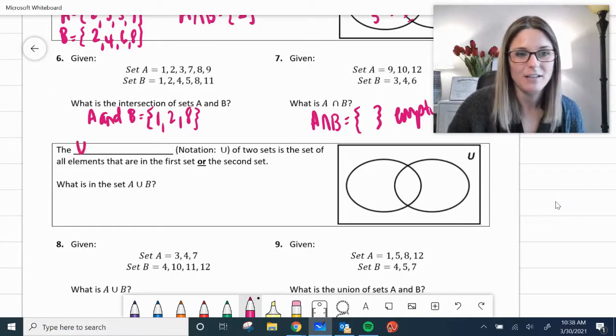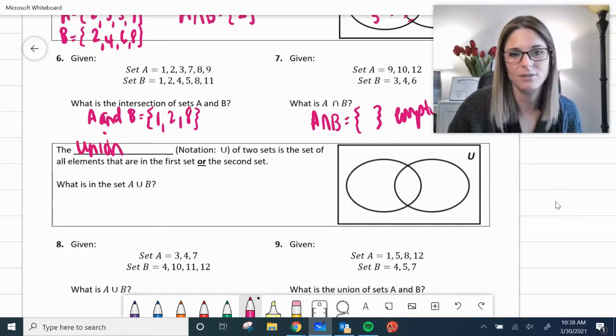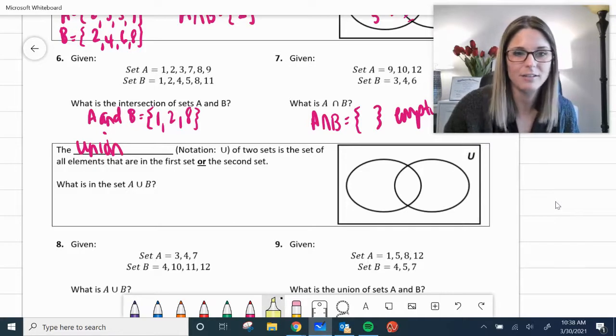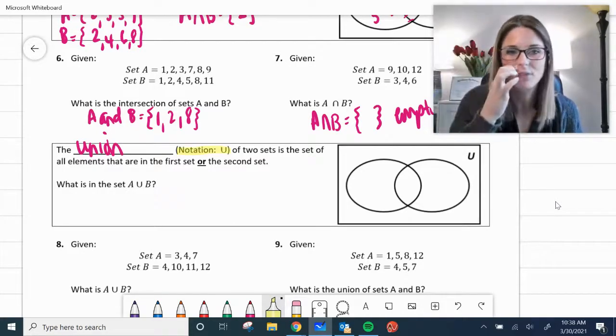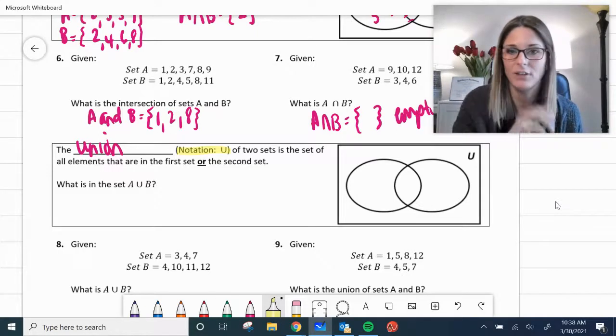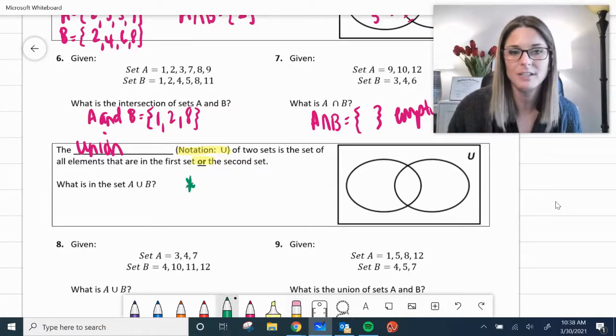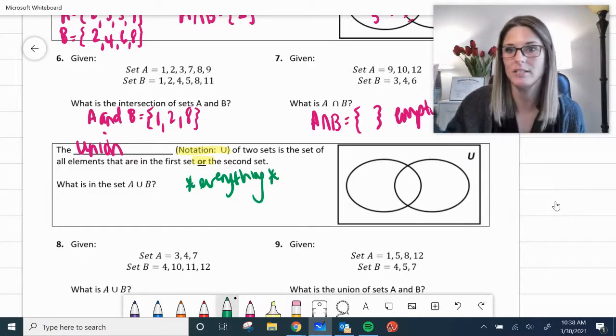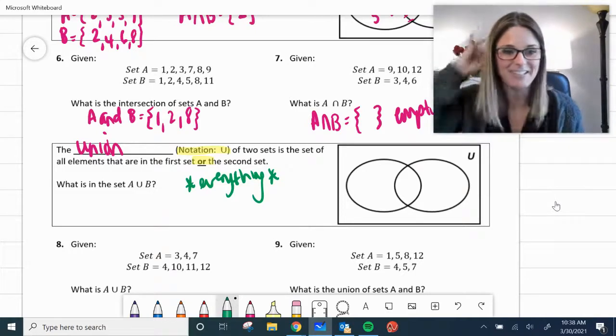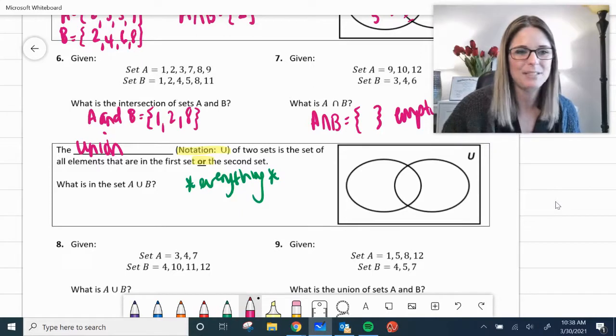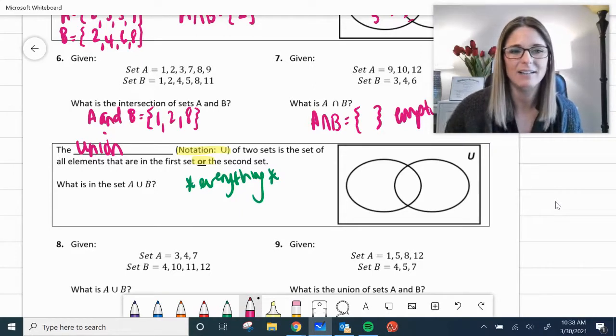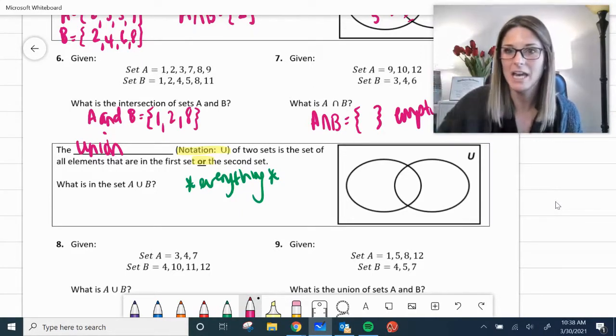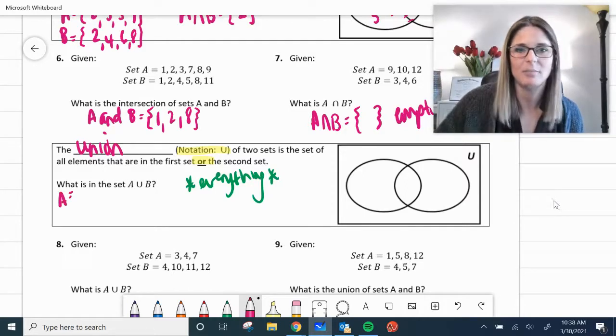Last one is union. The union of two sets. Note your notation there looks like a U of two sets is going to be all the elements that are in the first set or the second set. So it can be in either. Pretty much it's going to be everything. It doesn't matter if it's in set A or set B. It's going to be everything. So I'm going to our examples. What is the set of A union B? I'll list our numbers here again.